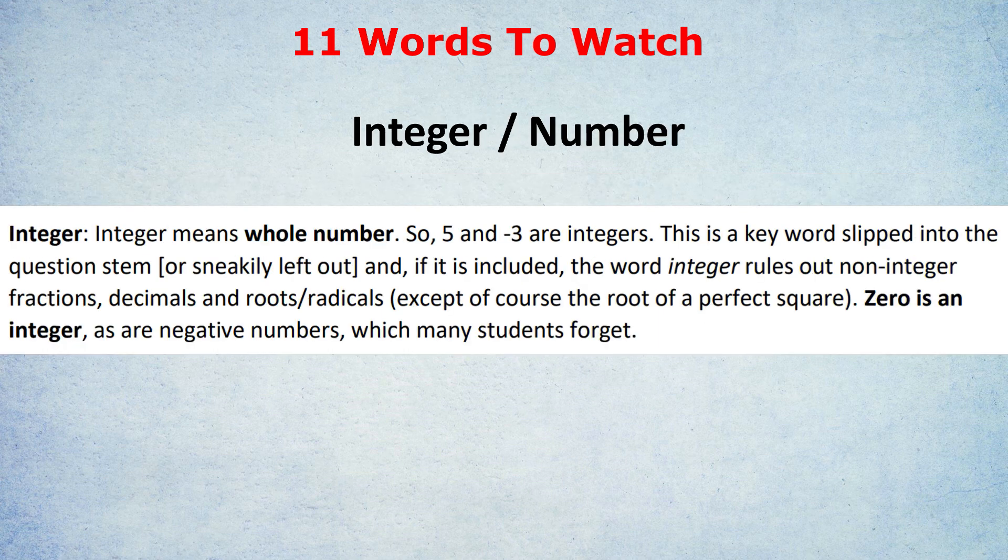The next word to watch for is integer slash number. This is a really important one. Does the test, the GRE or GMAT, use the word integer or does it use the word number? If it uses the word integer, it means a whole number. Could be positive, could be negative. Zero is an integer, minus three is an integer, five is an integer.